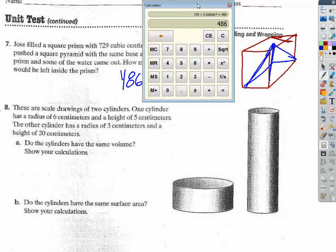These are scale drawings of two cylinders. One cylinder has a radius of 6 centimeters. And the other one has a radius of 3 and 20. Do they have the same volume? Remember, it's the area of the base times the height. So the volume of a cylinder is area of the base, which is pi r squared, because it's a circle, and the area of a circle is pi r squared times the height.